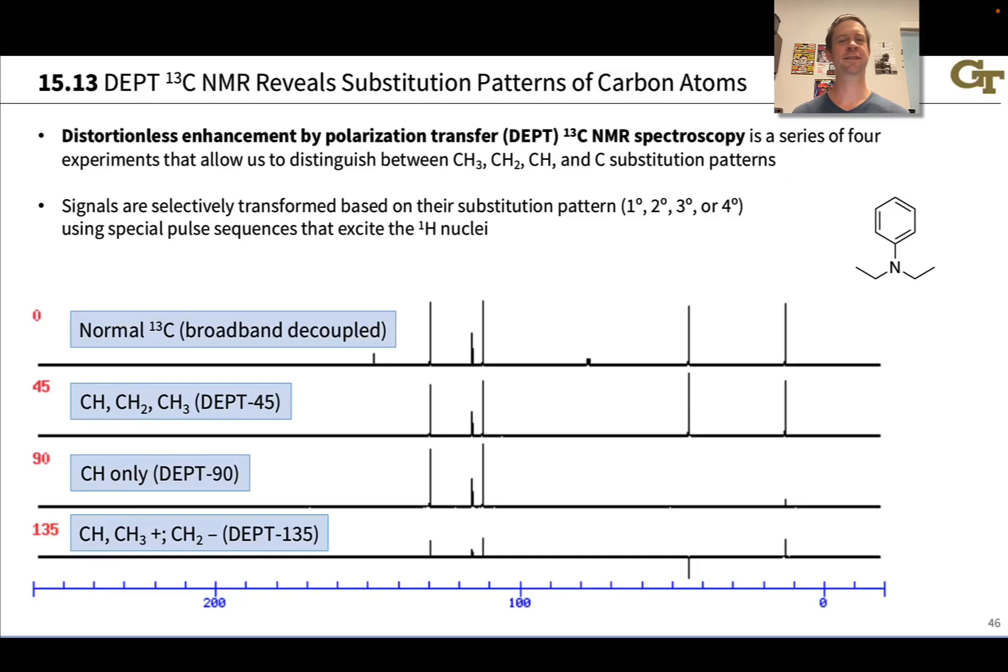To appreciate how to work with DEPT spectra, I think it's easiest to work in the context of an example. We'll look at the DEPT spectra of this compound which contains some CH, some CH2, and some CH3 groups. DEPT will allow us to distinguish between these different types of carbons with different substitution patterns, which helps in assigning each signal to a particular carbon within the molecular structure.